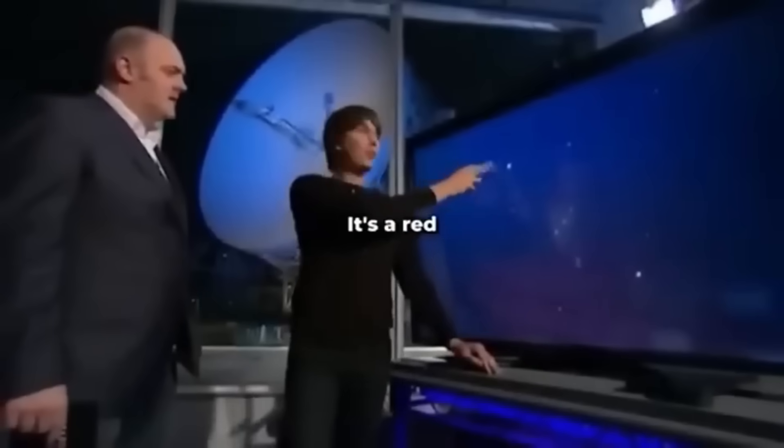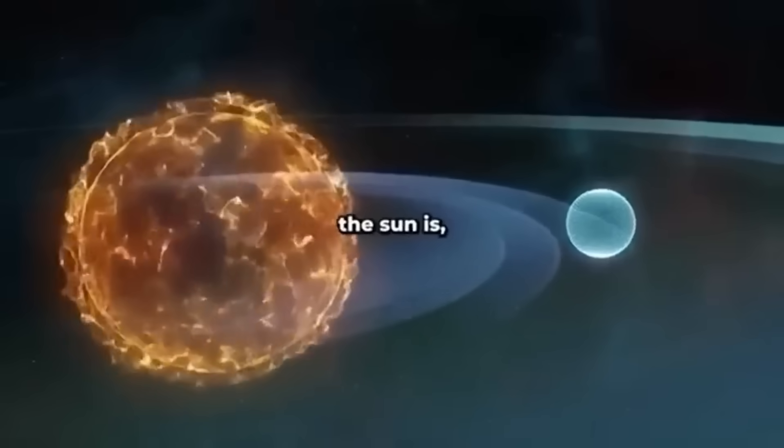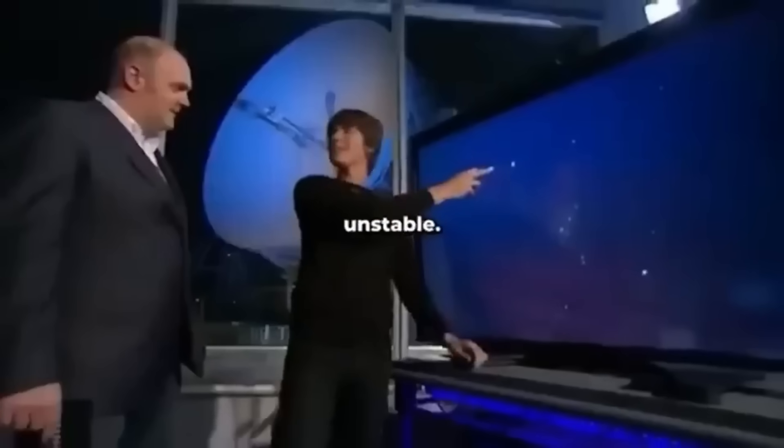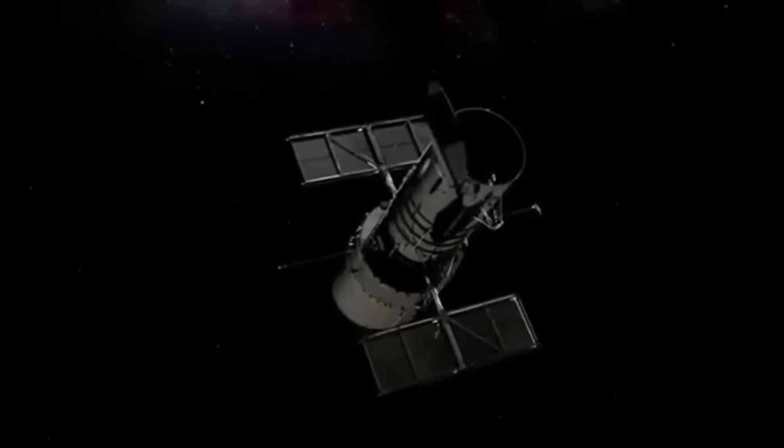Betelgeuse is a red giant star. If you put it where the sun is, it would extend out to the orbit of Jupiter. It's enormous. It's very unstable. It's about to explode.